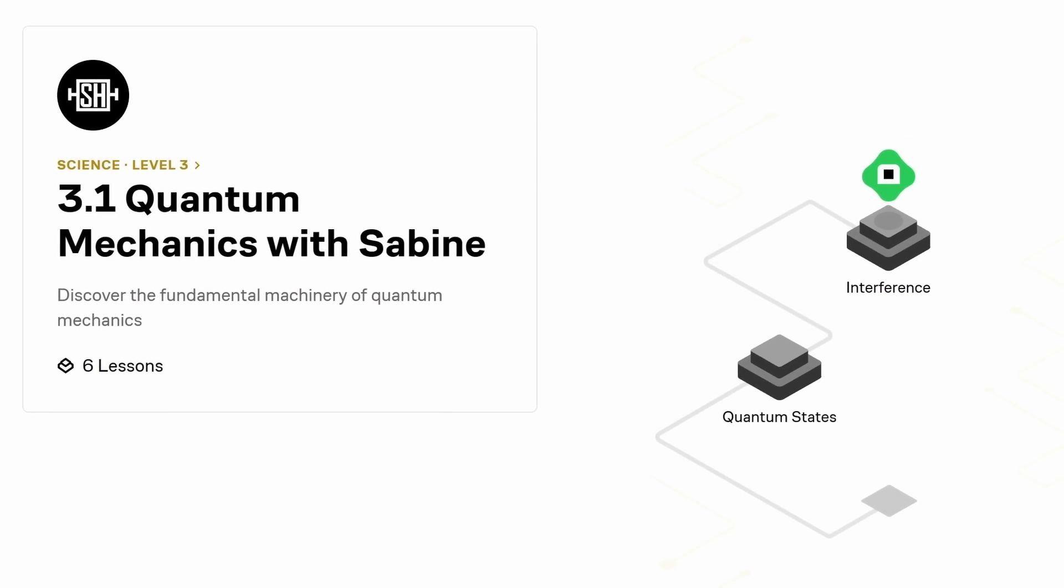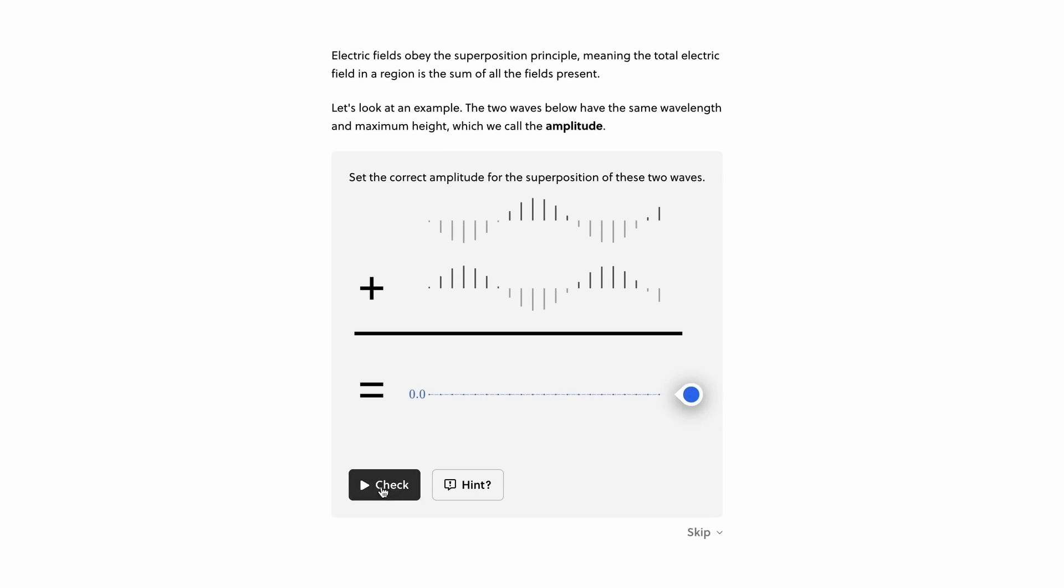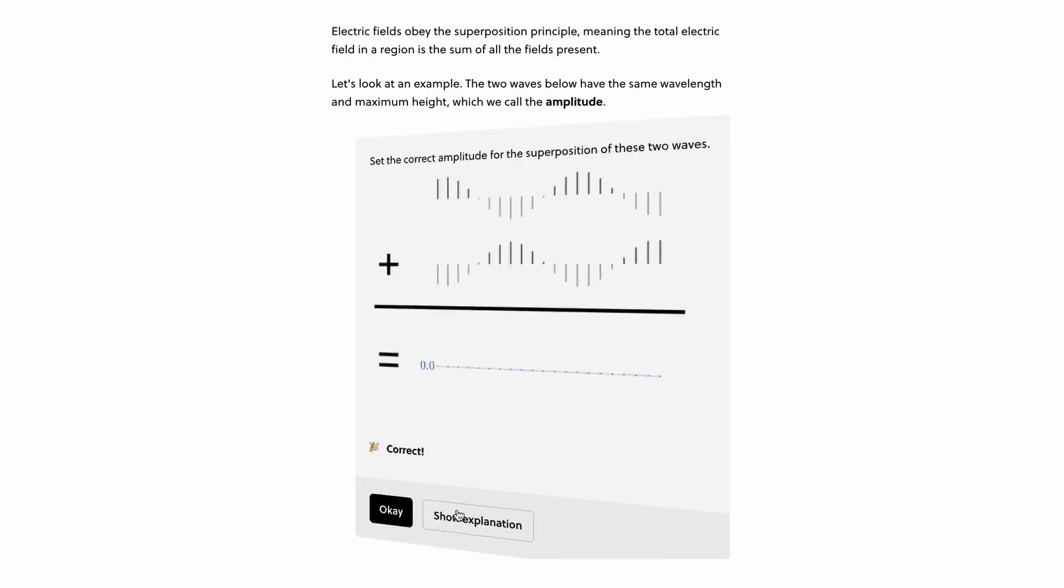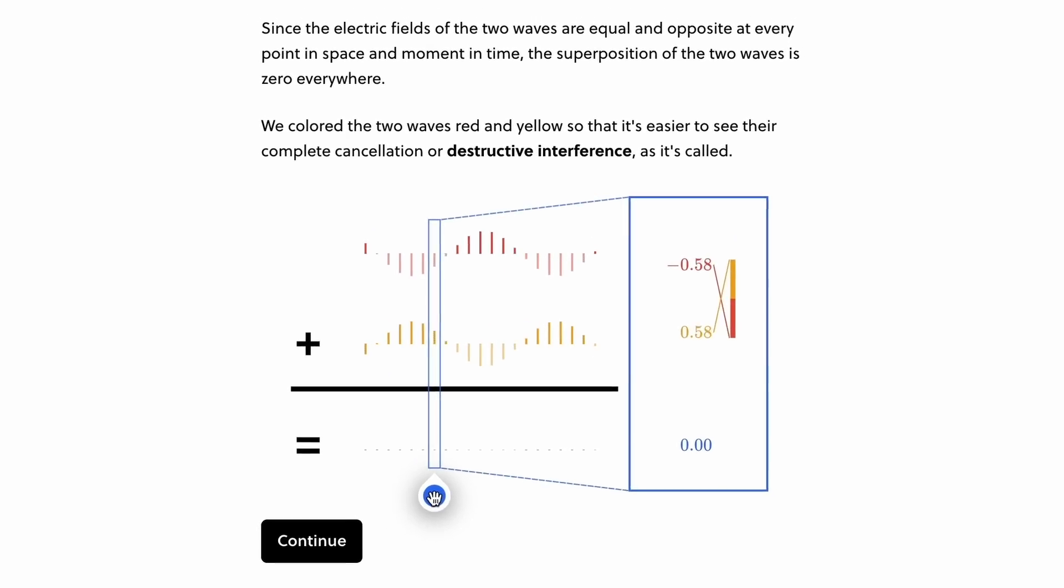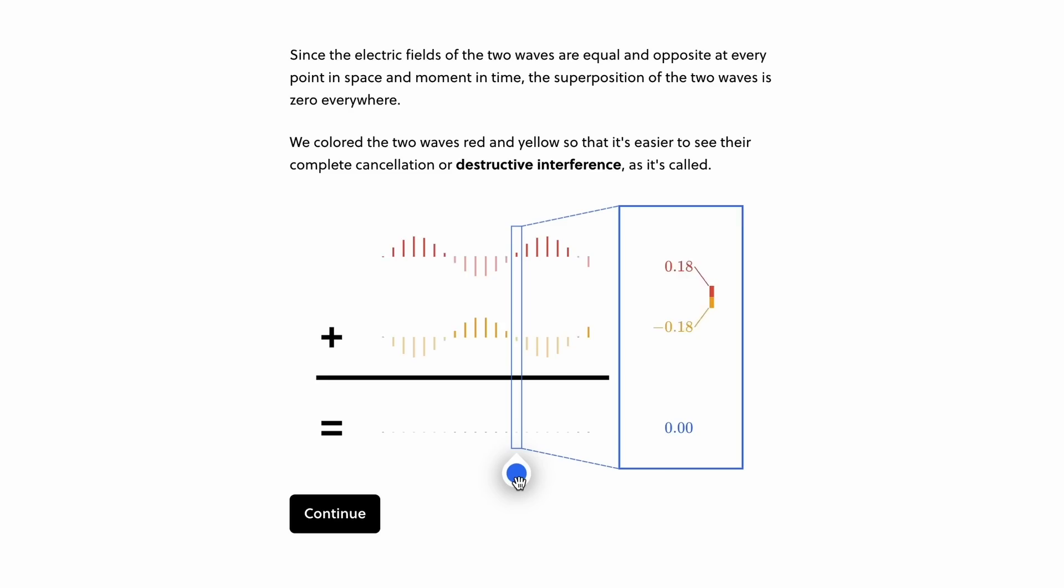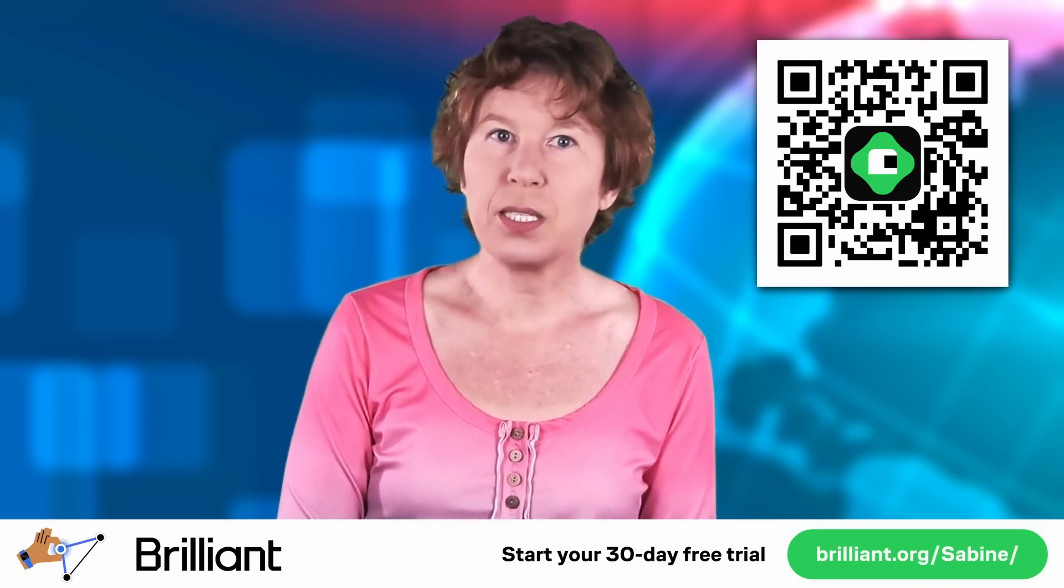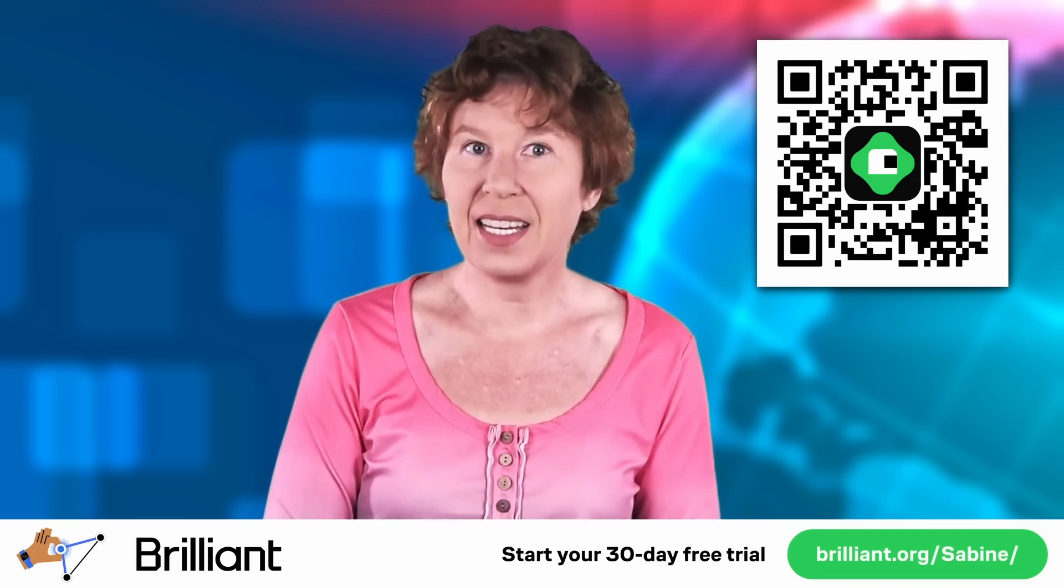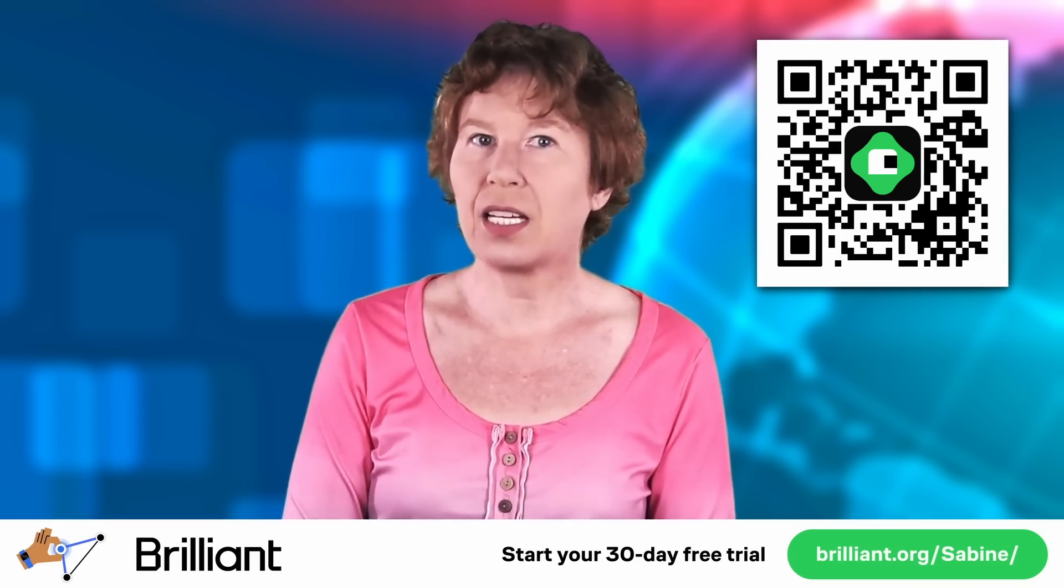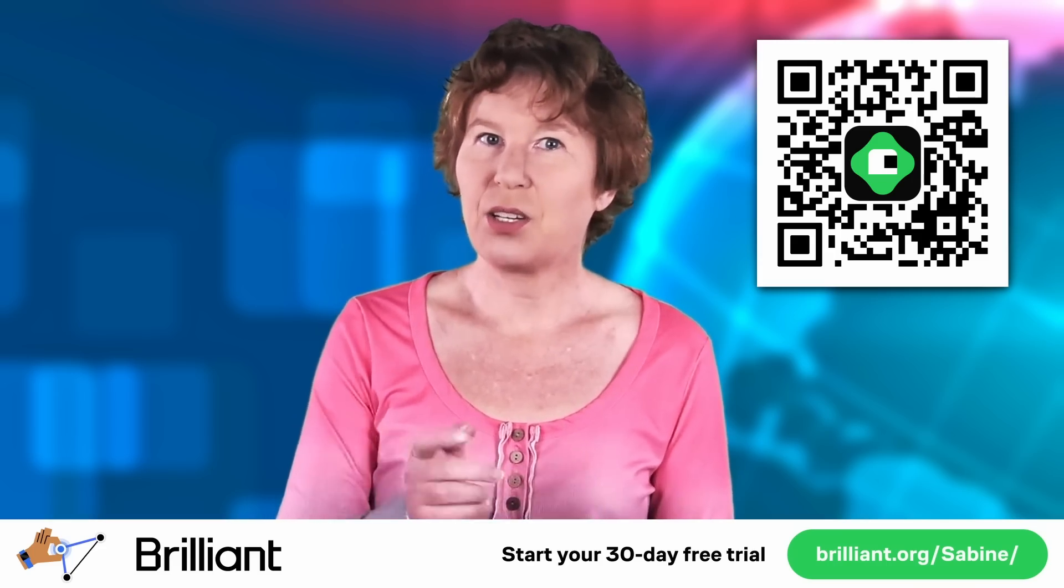I even have my own course on Brilliant. That's an introduction to quantum mechanics. It'll help you understand what a wave function is and what the difference is between superpositions and entanglement. It also covers interference, the uncertainty principle and Bell's theorem. And after that, you can continue maybe with their course on quantum computing or differential equations. And of course, I have a special offer for users of this channel. If you use my link Brilliant.org slash Sabine, you'll get to try out everything Brilliant has to offer for a full 30 days. And you'll get 20% off the annual premium subscription. So go and check this out.